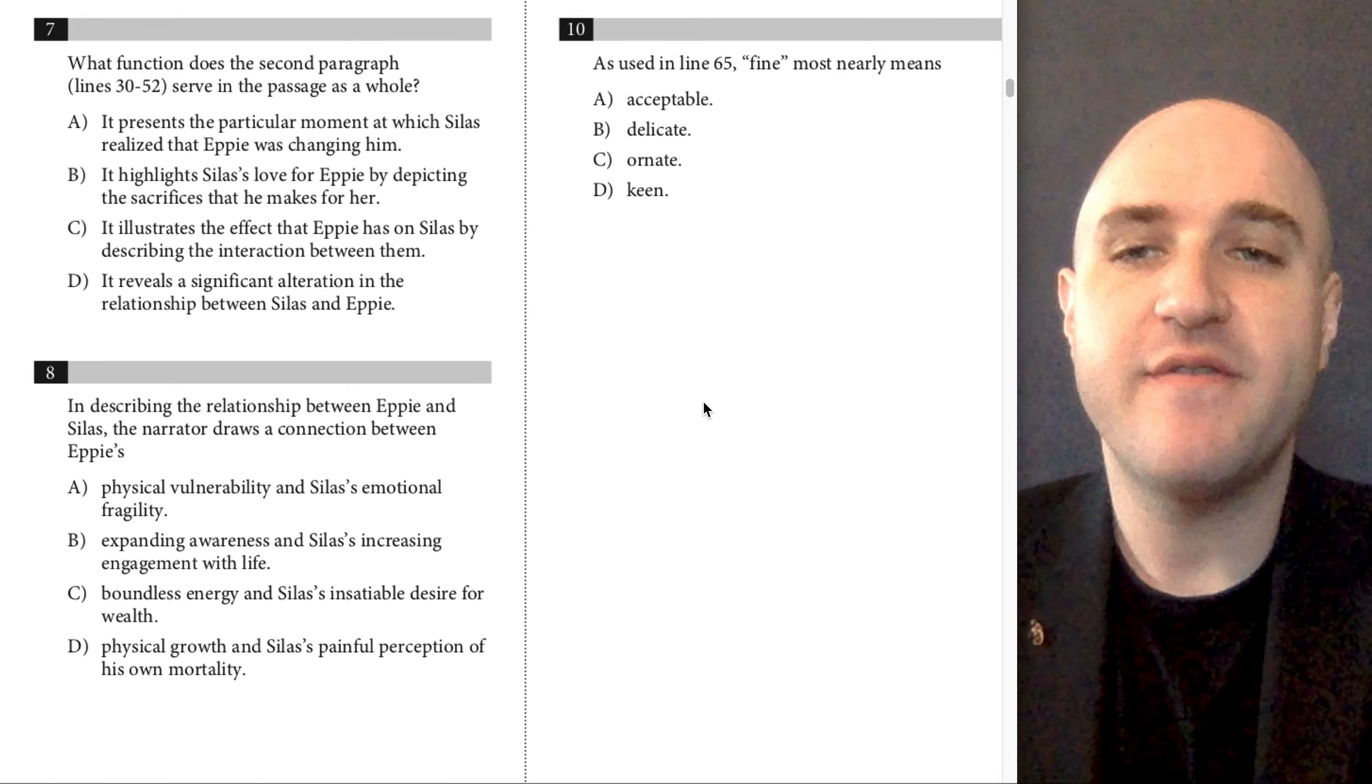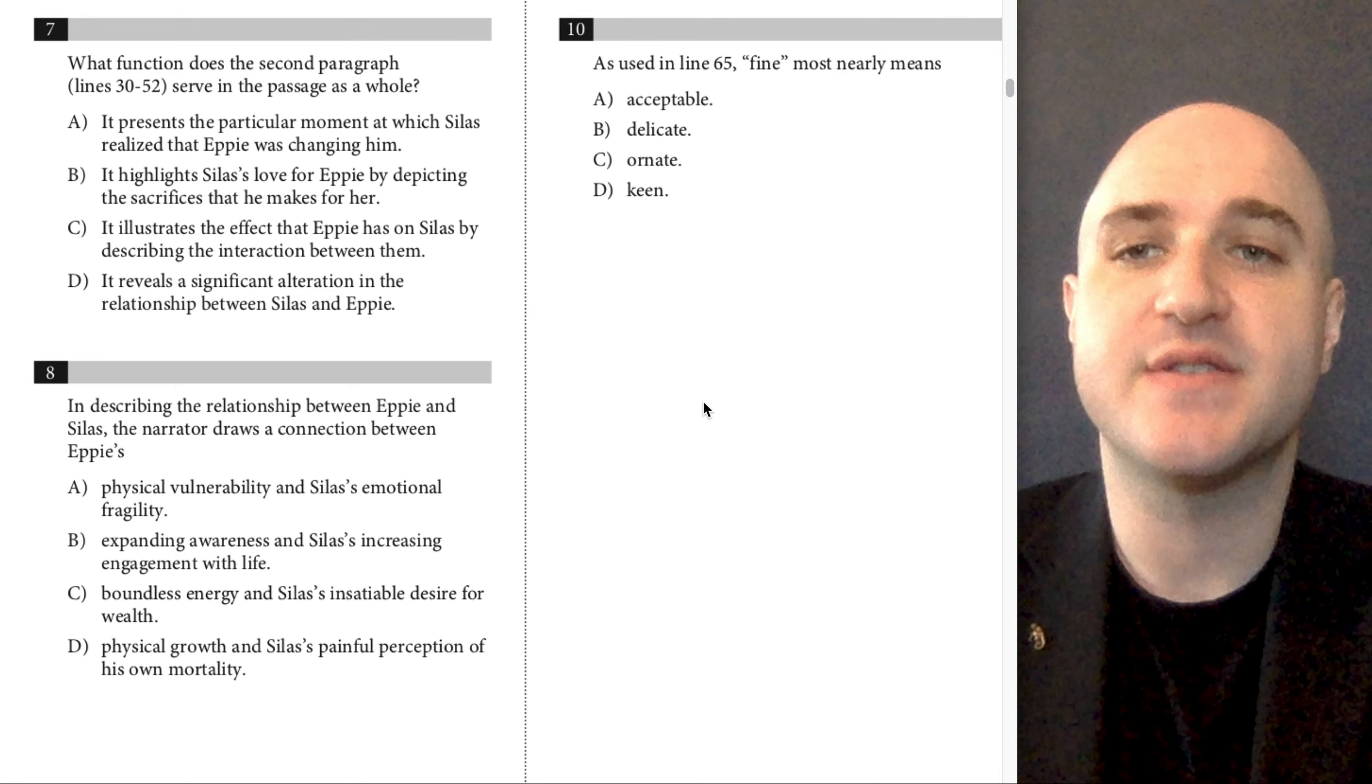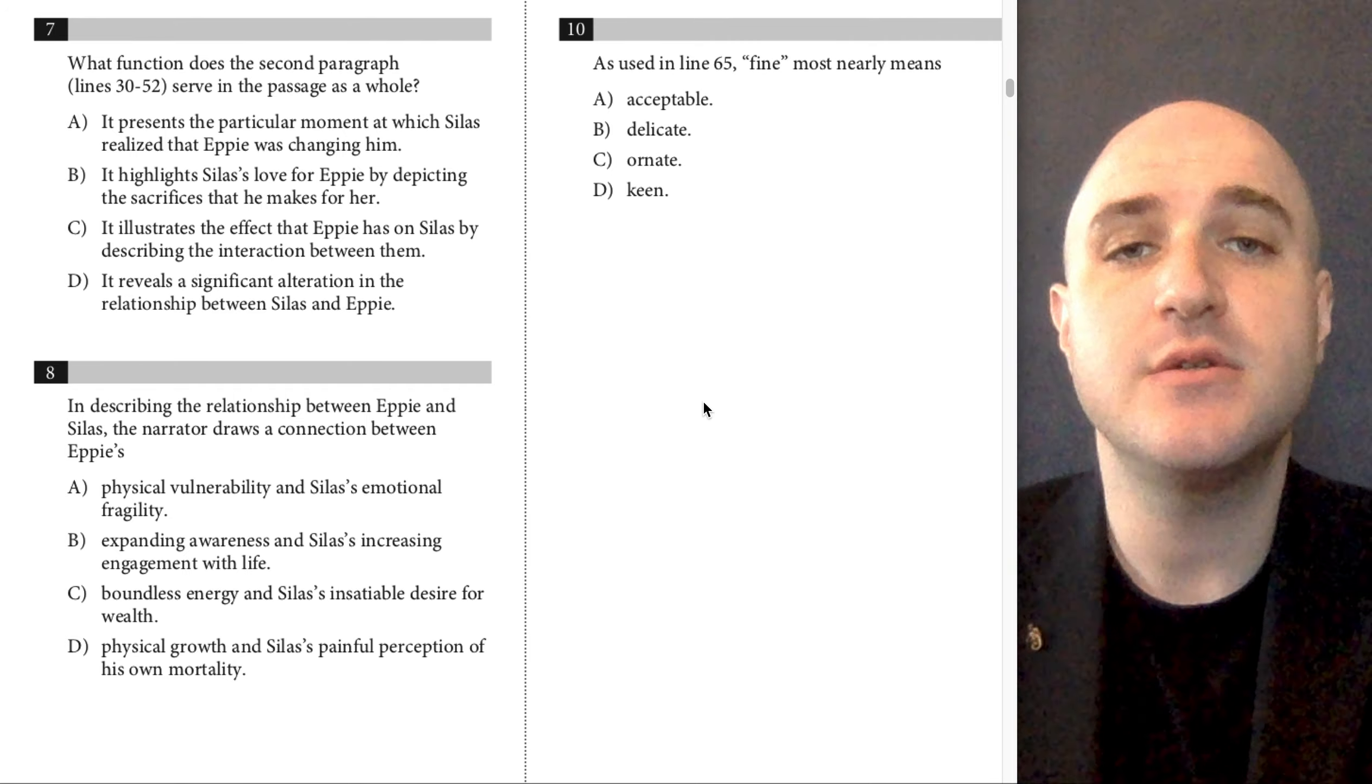Question number seven. What function does the second paragraph, lines 30 through 52, serve in the passage as a whole?